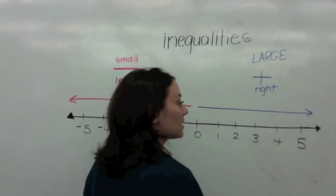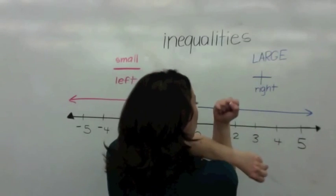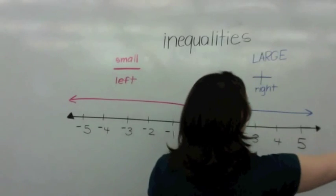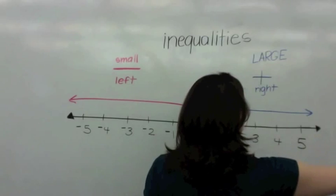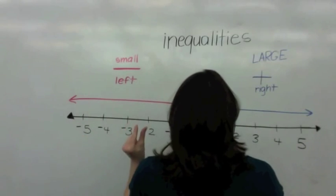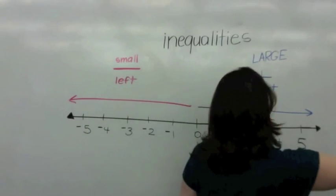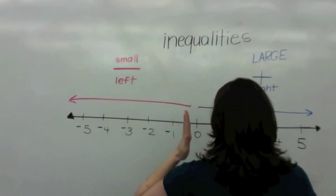Okay, together: Right is large. Left is small. Far from 0. Close.